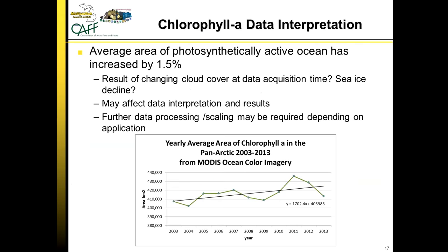When you look at this data you need to think about external forcing issues that might be affecting what you're seeing. For the chlorophyll a data, the average area of photosynthetically active ocean has increased by 1.5 percent. An obvious increase in the yearly average area of chlorophyll a across the pan-Arctic could be the result of changing cloud cover at acquisition time or sea ice decline across the Arctic — important to consider as this may affect data interpretation results, but also a very interesting scientific topic that could easily be adapted to a master's thesis.